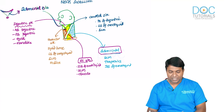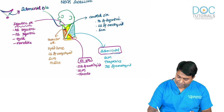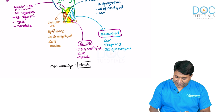As MBBS graduates, you should not forget any of these triangles — they are very important for your exams. Only when you know the anatomy will you know about neck swellings. The most common swelling in the neck overall is the lymph node.